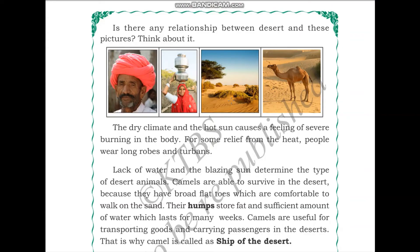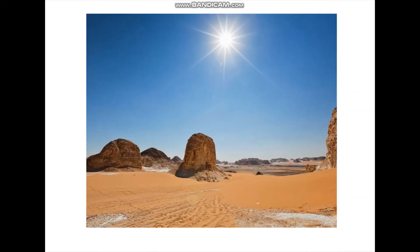Is there any relationship between desert and these pictures? In the first picture we see a man with a very long turban tied to his head. Why do people of the desert wear turbans? The desert sun tends to be very scorching hot, so to protect themselves people use turbans. Additionally, turbans can act as a protective veil to cover one's nose from sandy winds, which are very common in the desert.